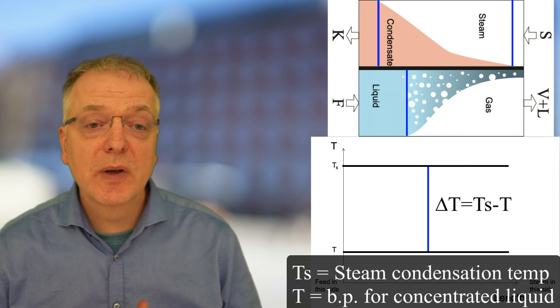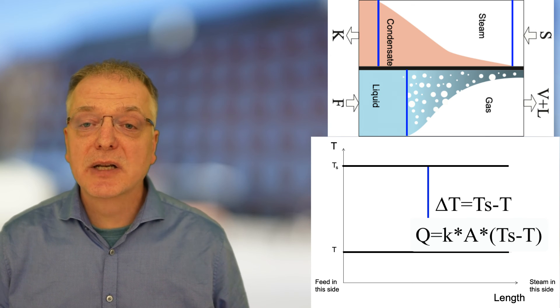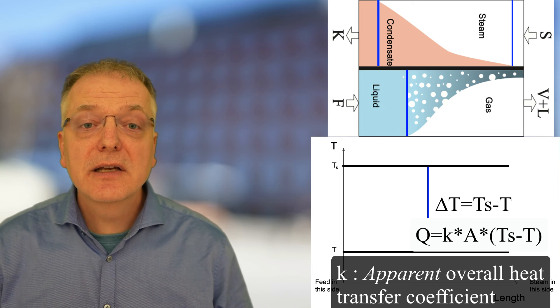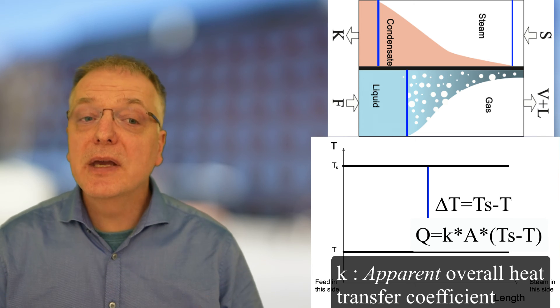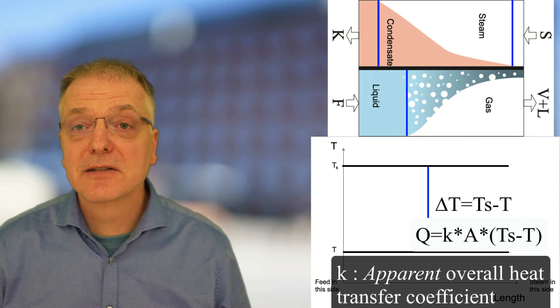The K value we will need in the equation Q equals K times A times Ts minus T is then called the apparent overall heat transfer coefficient. It is the value K appears to have if we pretend that the temperature difference is Ts minus T.